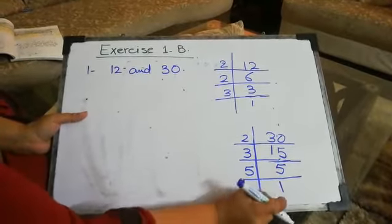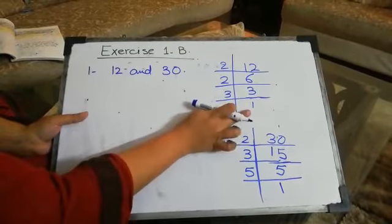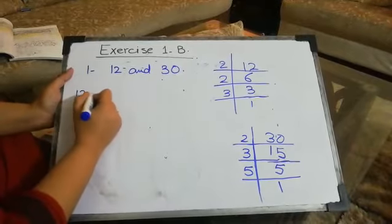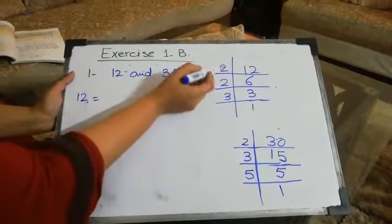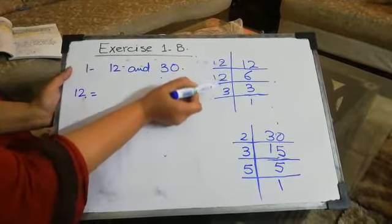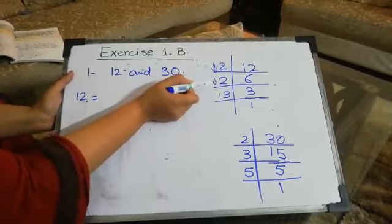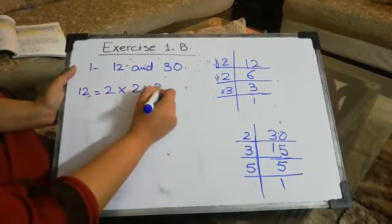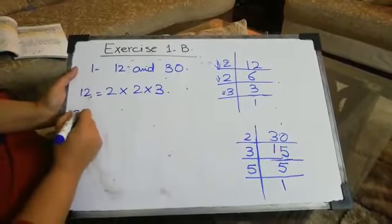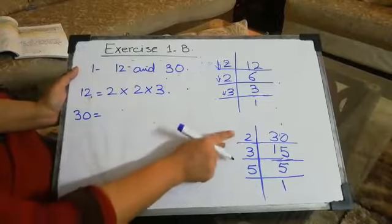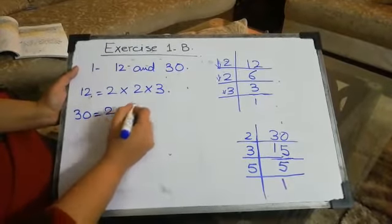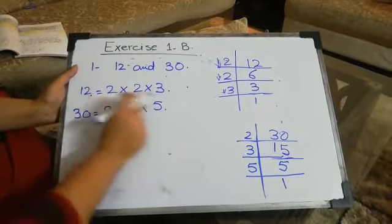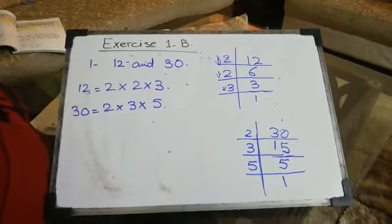Now we have 5, and 5 times 1 is 5, so we end with 1 meaning we are done. Now I am going to write the factors of 12: we have 2 multiplied by 2 multiplied by 3. And the factors for 30 are 2 multiplied by 3 multiplied by 5. We have now written all the factors of 12 and 30.